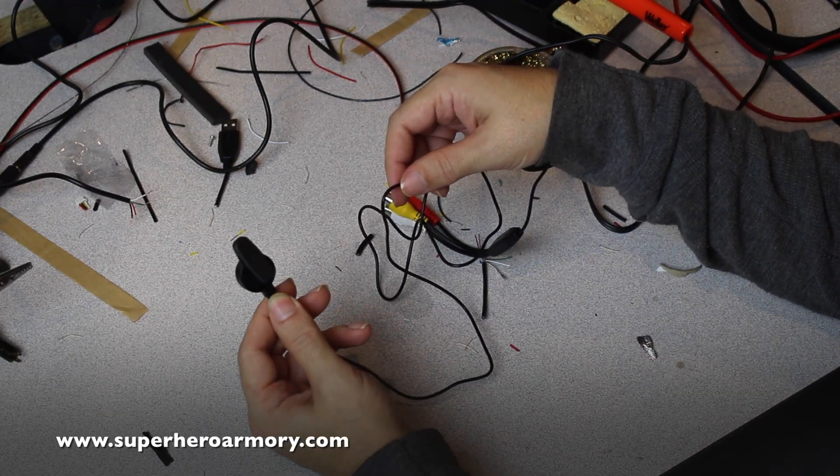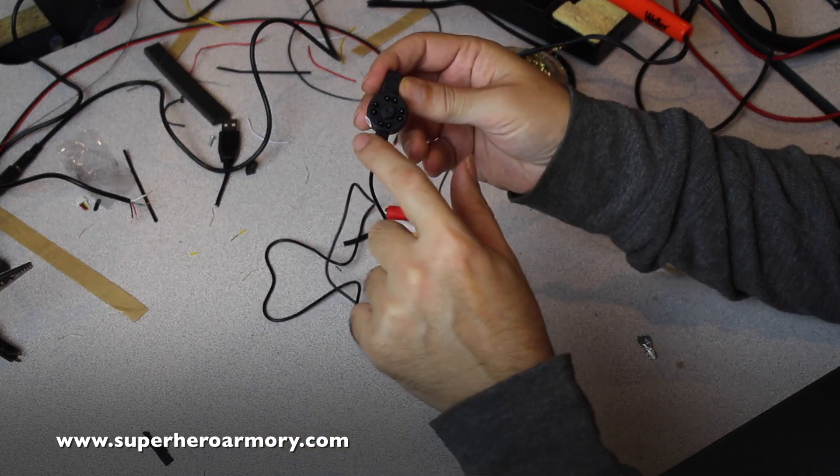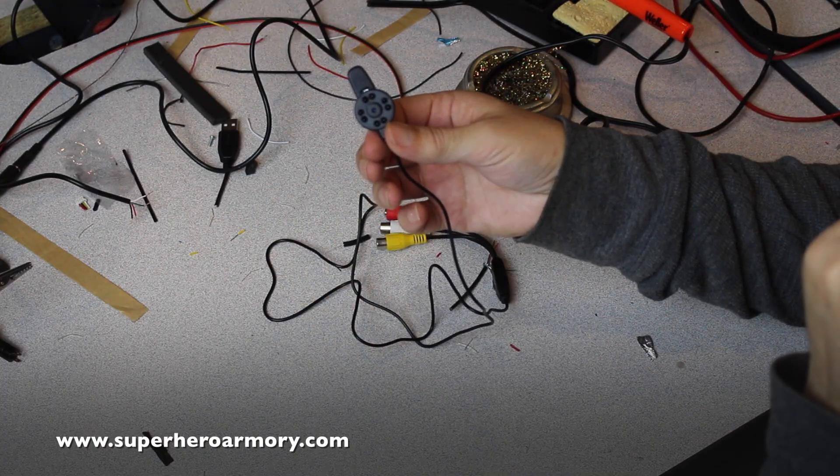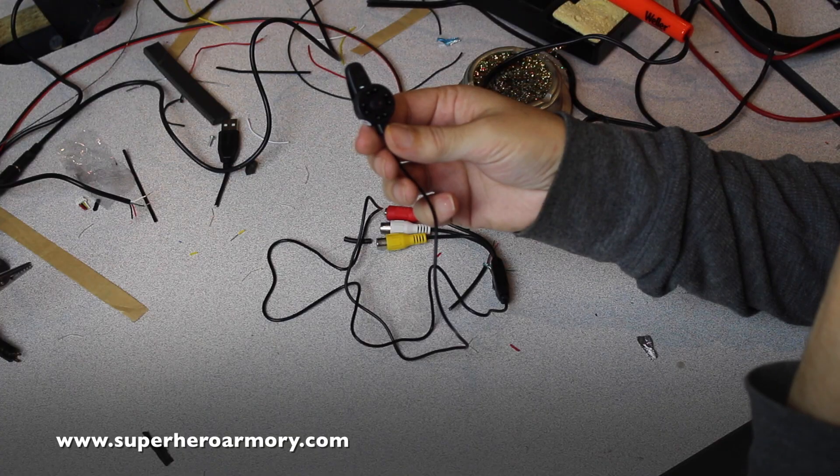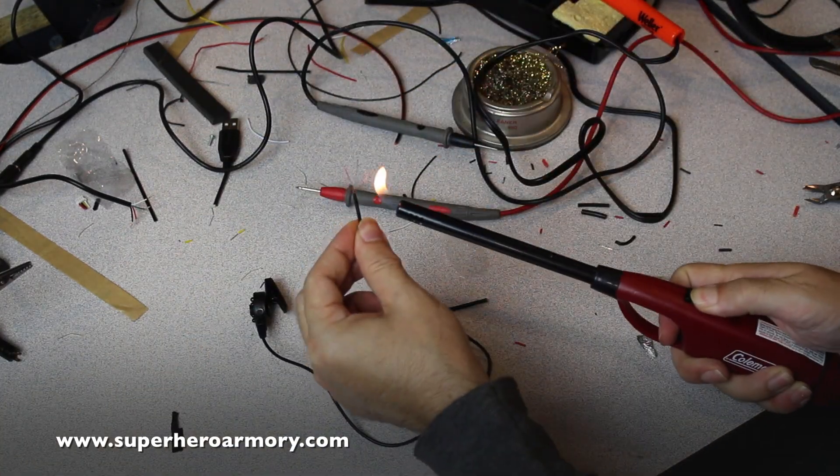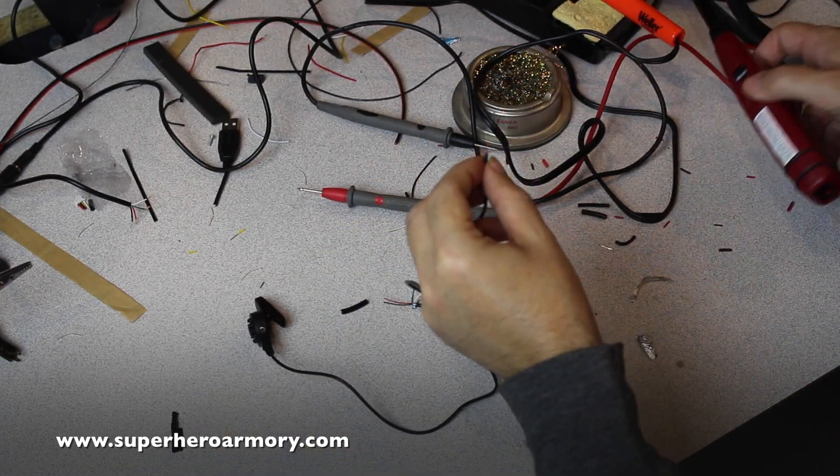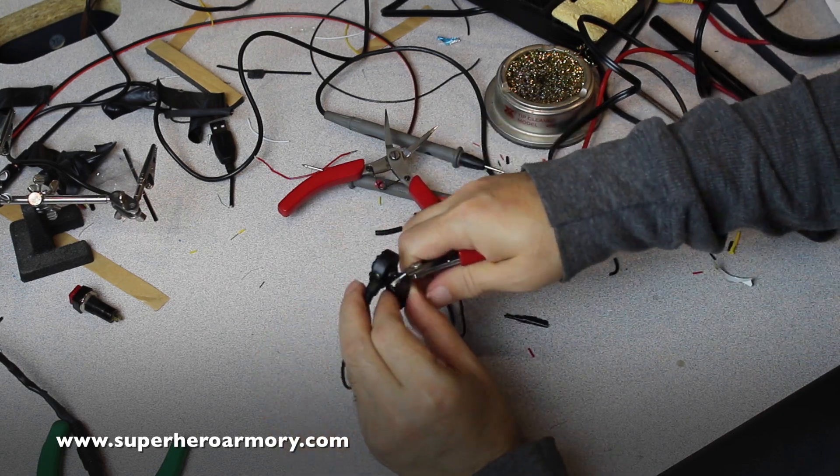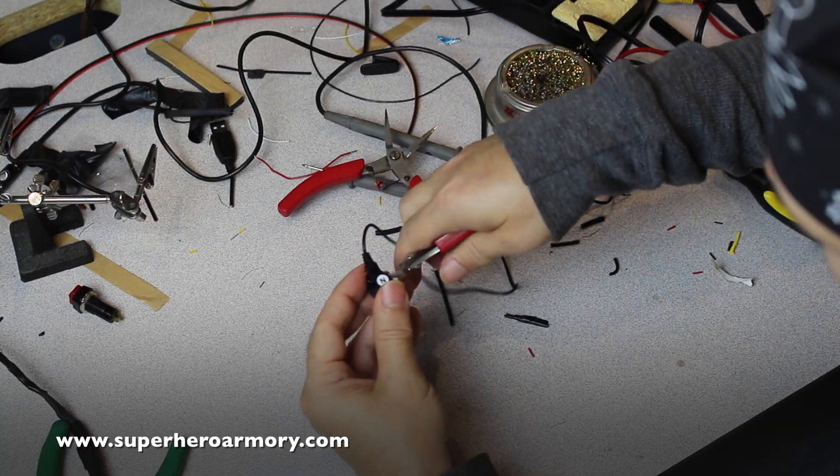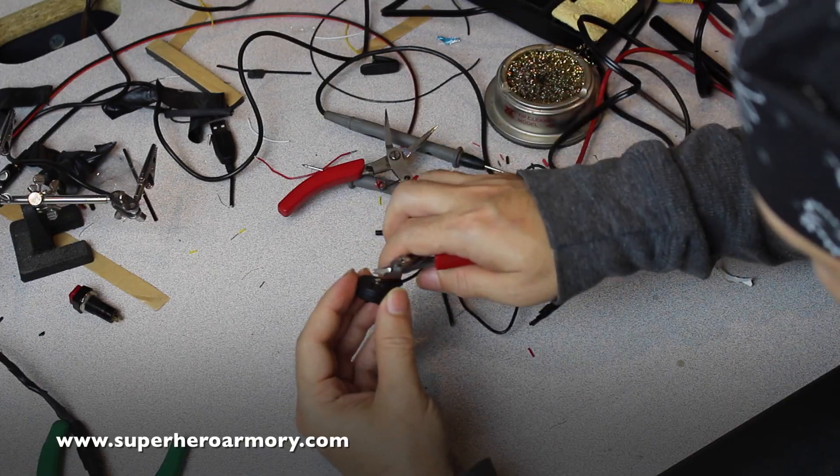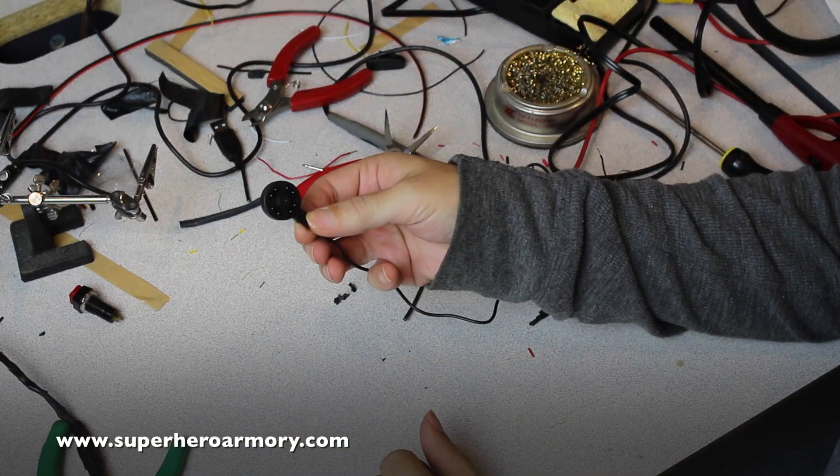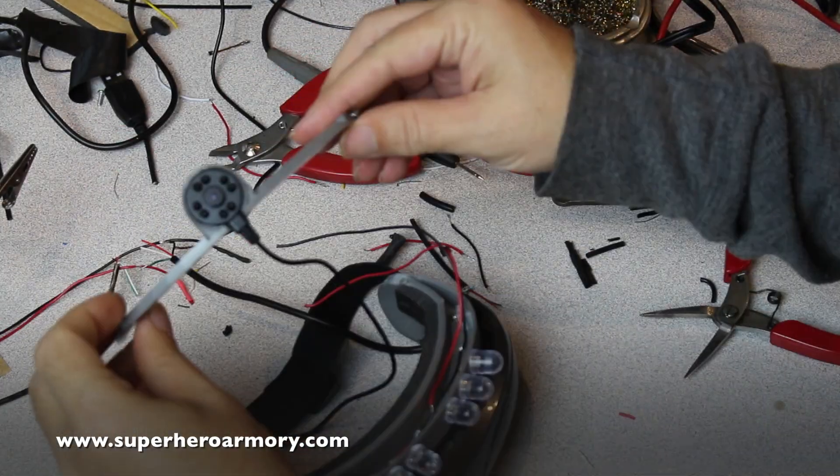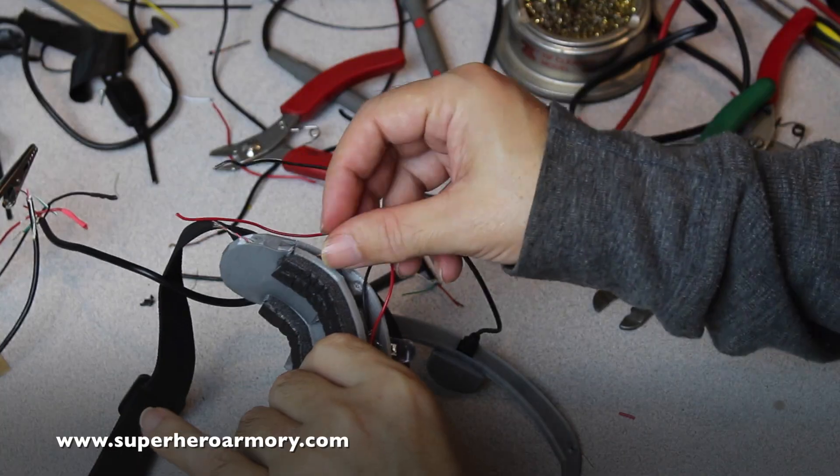All right so here is the night vision camera. In the very center is the actual camera and then around it is a cluster of infrared LEDs. So these LEDs will shine an invisible infrared light which only the camera can pick up and it'll allow you to see in complete darkness. Here I am cutting the clip off the back of the night vision camera and this is so it can mount into the 3D printed part that I made. Now I'm going to mount the night vision camera to the rest of the goggles.